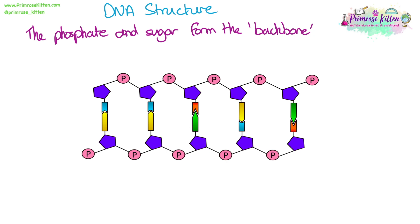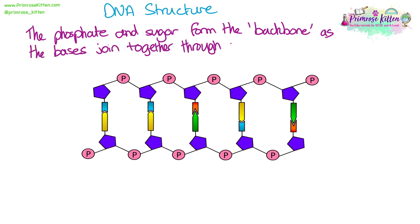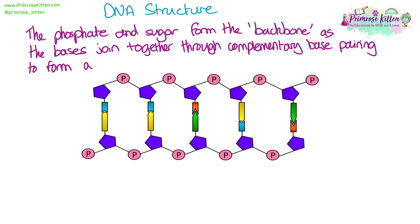When these nucleotides join together to form DNA, the phosphate and the sugar form the backbone. The bases join together through what we call complementary base pairing to form a ladder structure — they form the rungs. And together it forms a double helix.